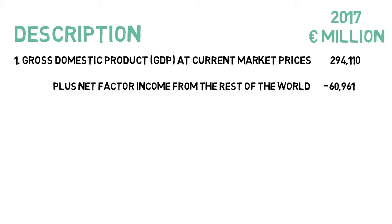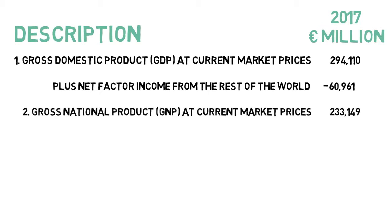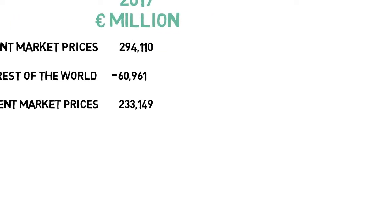The first adjustment we'll see is for something called net factor income. In the Irish case this is a negative figure — quite substantial at minus 60 billion. This is the difference between investment income (interest rates, profits, and labor income) earned abroad by Irish residents and companies — we call these inflows when money is coming back in from abroad — and incomes earned by non-Irish residents, which are outflows. This gives us a figure of Gross National Product, which is 233 billion in Ireland.